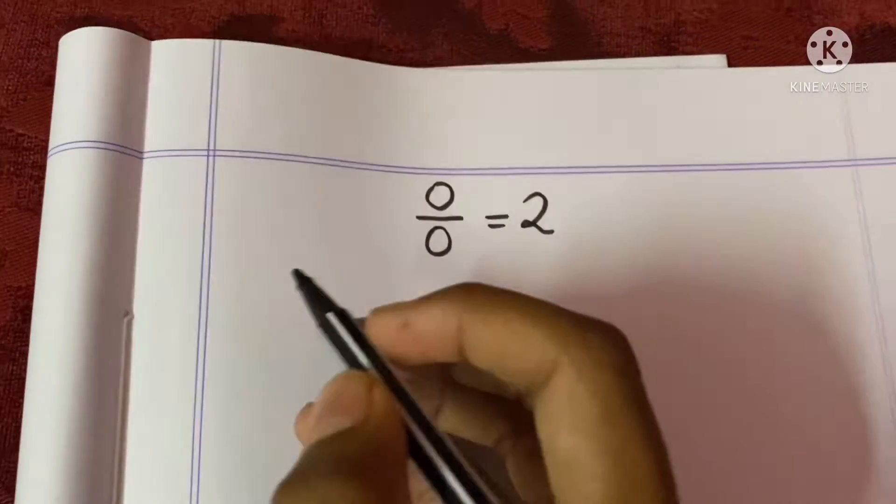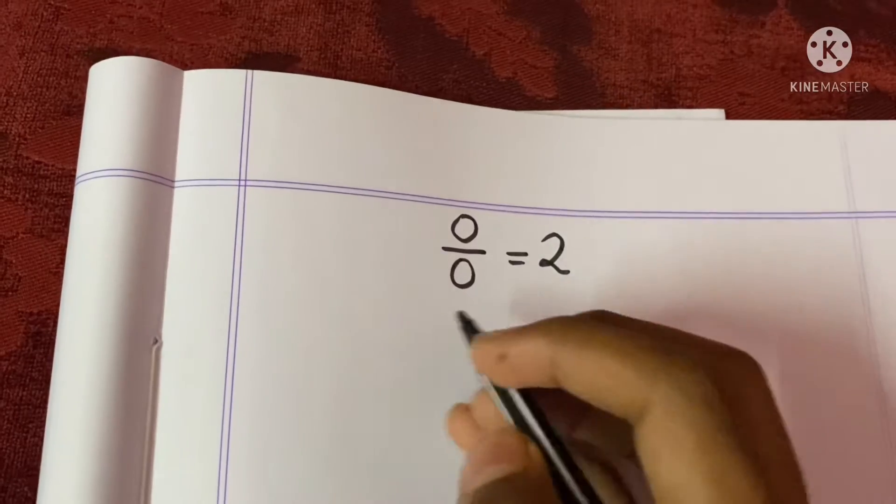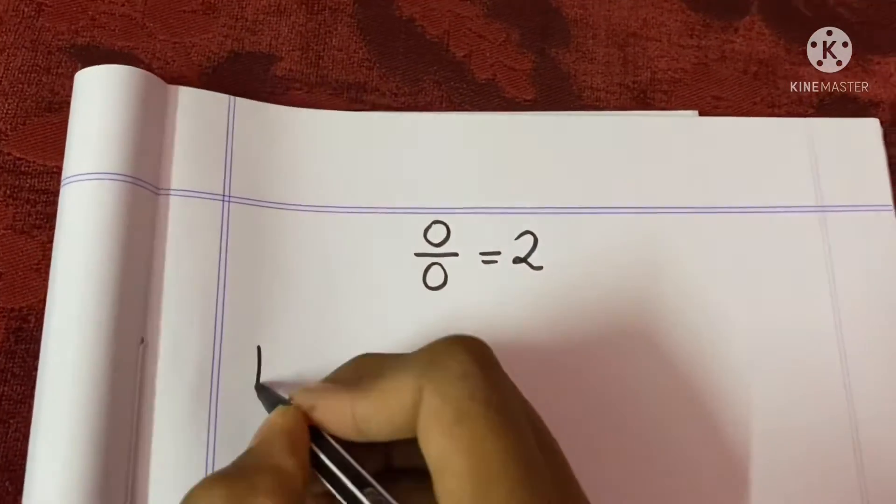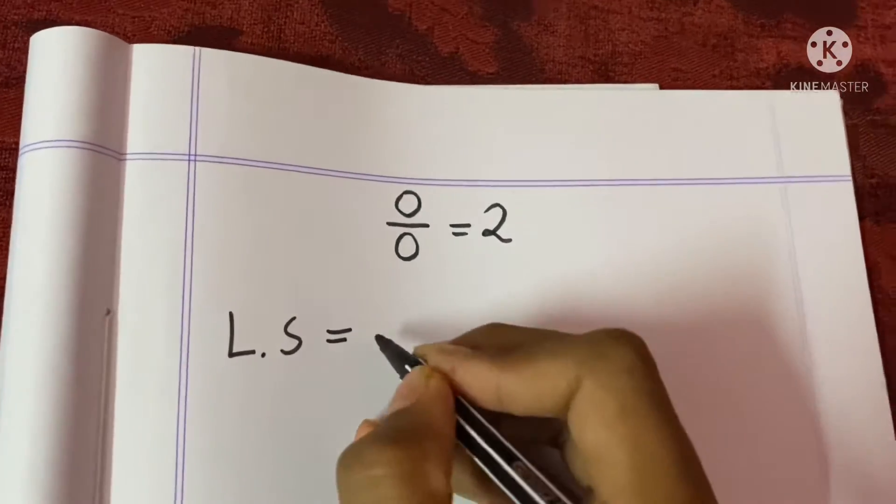So let's start our video. Okay, so you can see there 0 divided by 0 equals 2. We will prove that. Okay, so first of all we have to take